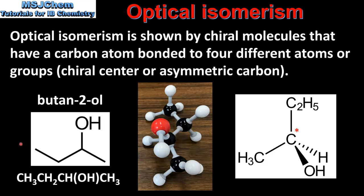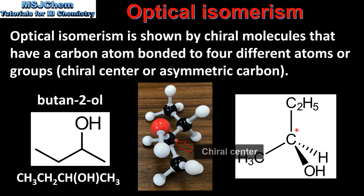The first example we look at is butan-2-ol. Butan-2-ol is a secondary alcohol with 4 carbon atoms and is a chiral molecule — it has a carbon atom bonded to 4 different atoms or groups. Looking at the model of butan-2-ol, this carbon atom is bonded to a CH3 group, an OH group, a hydrogen, and a C2H5 group. Therefore, this is a chiral centre or asymmetric carbon.